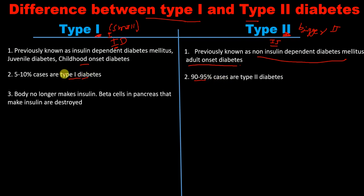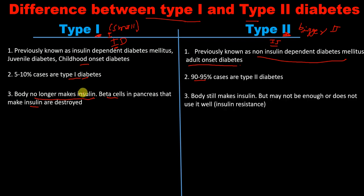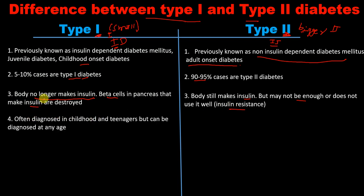Because type 1 is insulin dependent, the body no longer makes insulin. The beta cells — the insulin-producing cells in the pancreas — are destroyed. In type 2 diabetes mellitus, the body still makes insulin, but it may not be enough, or the body may not use it well — this is called insulin resistance.